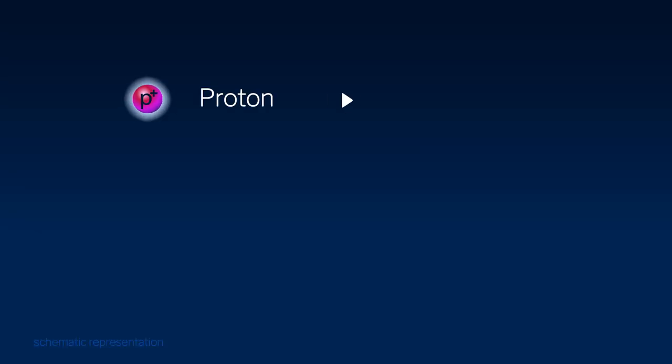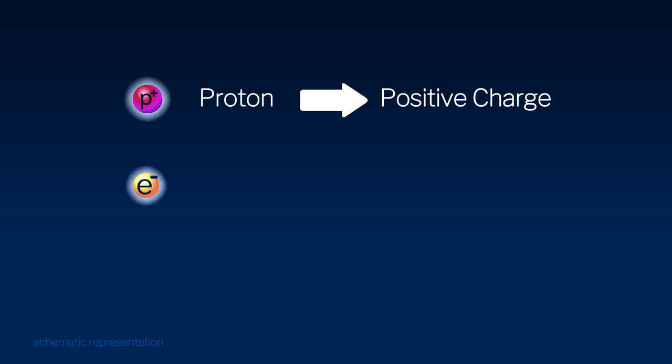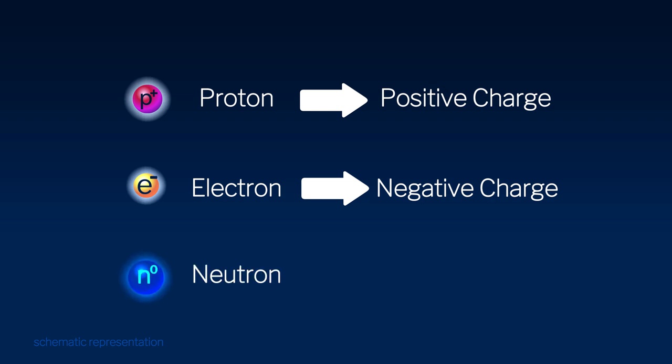Protons and electrons both carry an electrical charge. The charges they carry are opposite to each other. Protons carry a positive electrical charge while electrons carry a negative electric charge. Neutrons are neutral — they carry no charge at all.